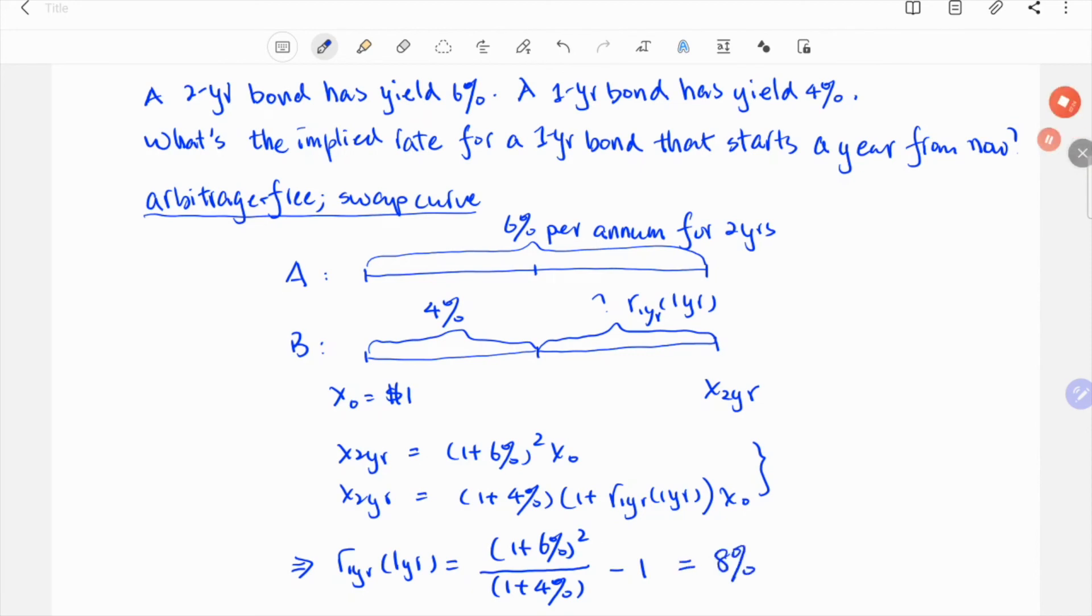We can in fact estimate it simply by first order estimation: 2 times 6% minus 4%, which is about 8%.